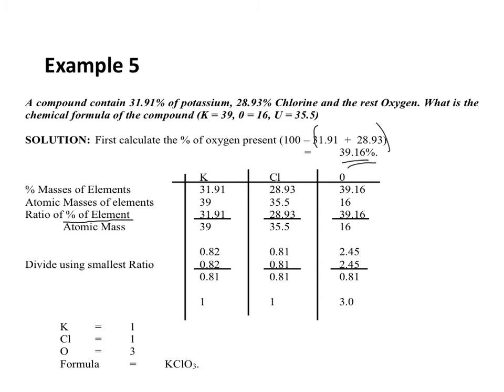The division with the smallest value is used to divide all others. In this case, the smallest is chlorine with 0.81. So you divide 0.82 by 0.81, which is approximately 1. For chlorine, 0.81 over 0.81 is 1. For oxygen, 2.45 over 0.81 is equal to 3.0. So potassium equals 1, chlorine equals 1, and oxygen equals 3. Therefore the formula is KClO3 — potassium chlorate.